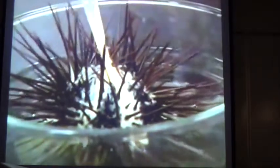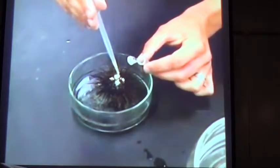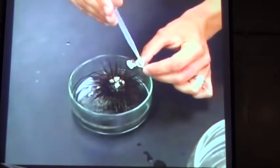If a white fluid is released, then you will know it is sperm. Collect the fluid with a pipette and store it on ice in a plastic tube.